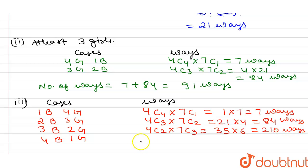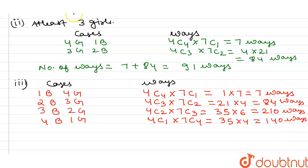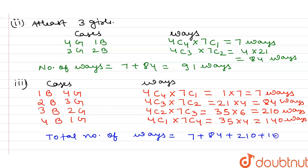For four boys and one girl: 4C1 × 7C4 = 4 × 35 = 140 ways. So total number of ways = 7 + 84 + 210 + 140 = 441 ways. This is the answer to the given question.